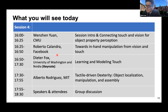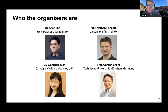In the last session, Wenzhen will talk about connecting touch and vision for object property perception. Next, Roberto Calandra from Facebook will present on enhanced manipulation from vision and touch. Then our keynote from Professor Dieter Fox of the University of Washington and NVIDIA will cover learning and modeling tasks. The final talk is from Alberto Rodriguez at MIT on tactile-driven dexterity: object localization, manipulation, and assembly. These talks cover a wide range of aspects of vision-tactile sensing in perception-action loops.